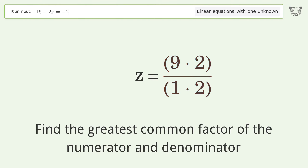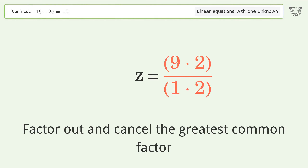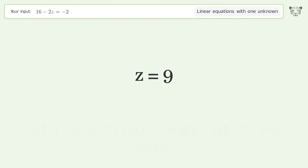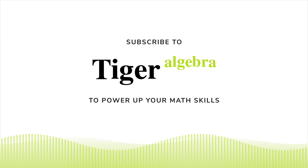Find the greatest common factor of the numerator and denominator, factor out and cancel the greatest common factor. And so the final result is z equals 9.